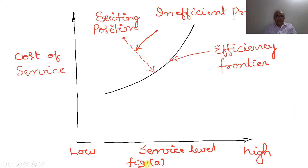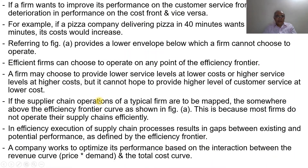Efficient firms can choose to operate on any point of the efficiency frontier. A firm may choose to provide lower service levels at lower cost, or higher service levels at higher cost, but it cannot hope to provide a higher level of customer service at lower cost.